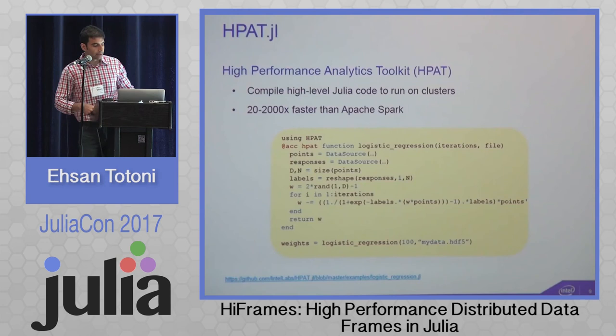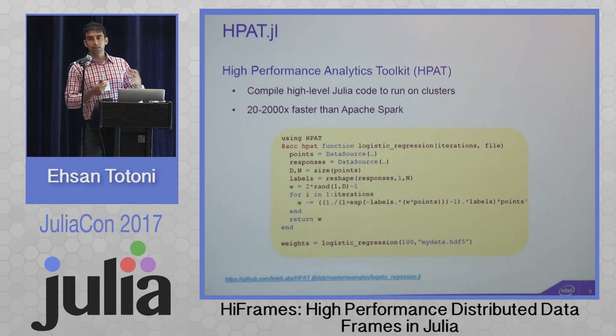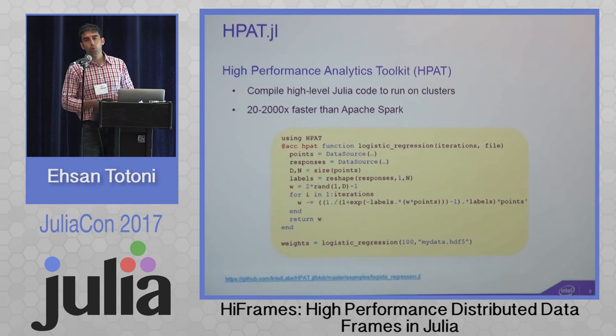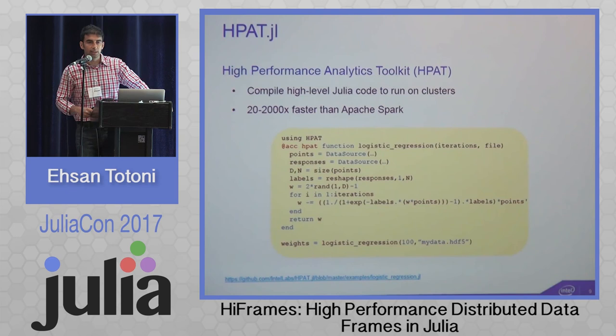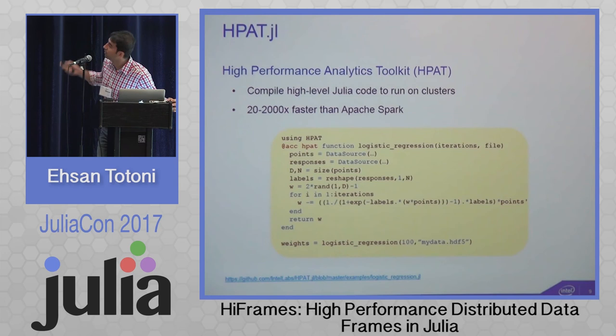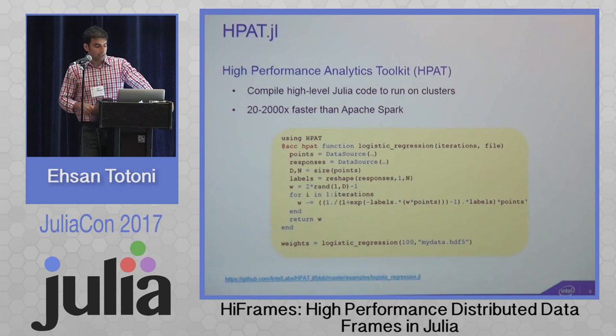HPAT stands for High Performance Analytics Toolkit, which compiles a subset of high-level Julia data-parallel operations — arrays and so on — to run on clusters automatically. We have performance comparisons showing 20 to 2,000 times faster than Apache Spark. For example, I have this logistic regression function decorated with @acc HPAT, meaning it should be compiled with HPAT. This function has a whole lot of array, vector, and matrix operations that HPAT understands and automatically parallelizes for clusters.